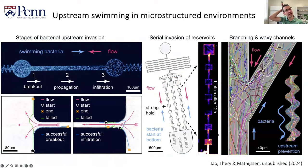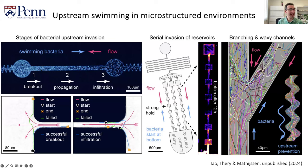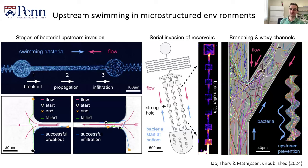The next thing we're working on is upstream swimming in microstructured environments. Everything until now used simple rectangular microfluidic channels with no interesting geometry. But in most natural and medical environments, bacteria live in spaces with a lot of structure. The most important scenario is bacteria sitting in a reservoir on one side, breaking out against the flow, propagating upstream in a narrow channel, then infiltrating a new reservoir. In that new reservoir the flows are weaker, they settle down, start dividing, build up a population, and then go onwards.